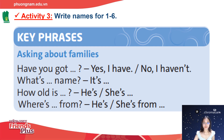Here are the key phrases used to ask about family: 'Have you got...?' — we can answer either 'Yes, I have' or 'No, I haven't.' 'What's his/her name?' — 'It's...' 'How old is he/she?' — 'He/She is...' 'Where's he/she from?' — 'He/She's from...' 'He/She is very...' and 'How many...?'